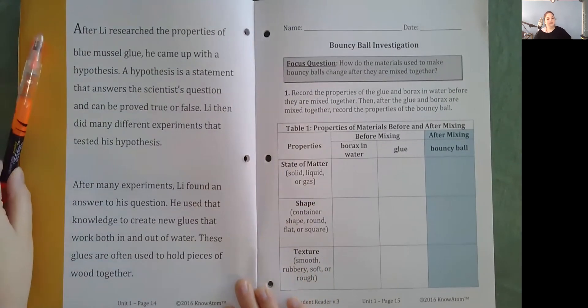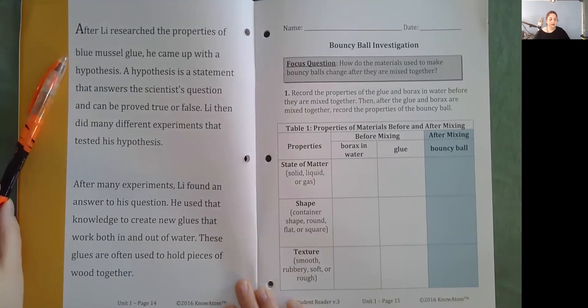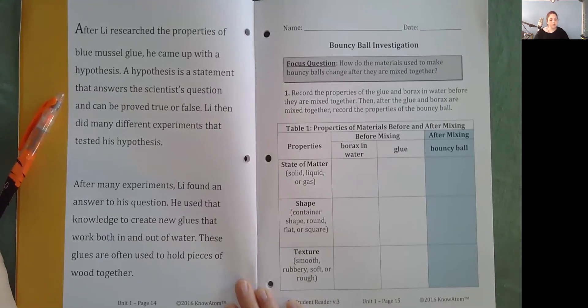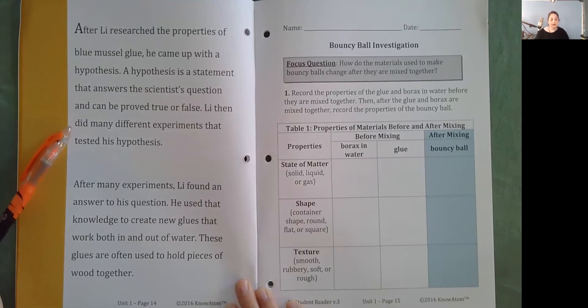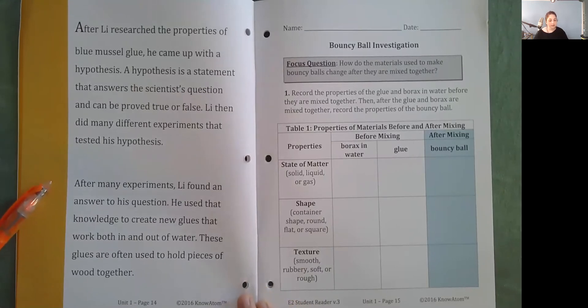After Lee researched the properties of blue muscle glue, he came up with a hypothesis. A hypothesis is a statement that answers the scientist's question and can be proved true or false. Lee then did many different experiments that tested his hypothesis. After many experiments, Lee found an answer to his question. He used that knowledge to create new glues that work both in and out of water. These glues are often used to hold pieces of wood together.